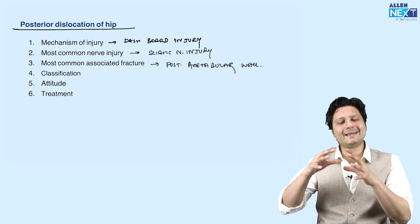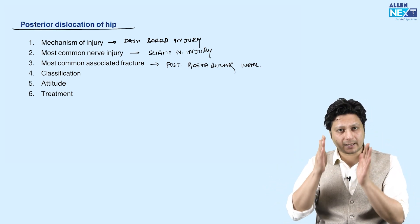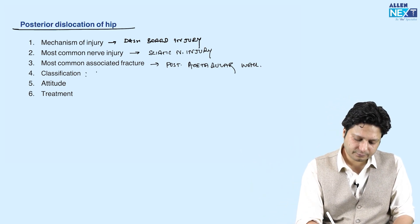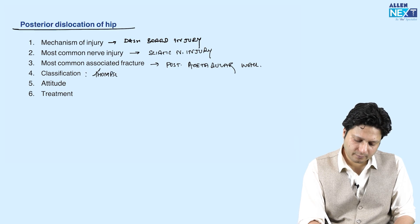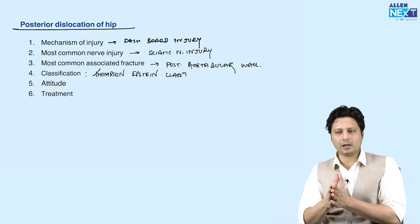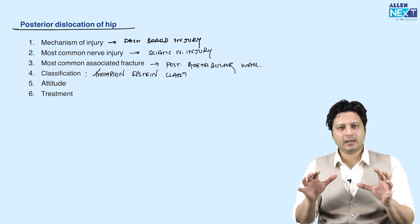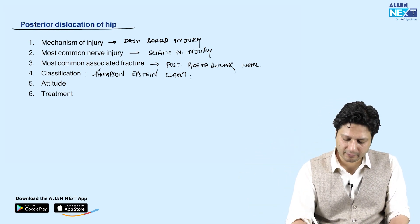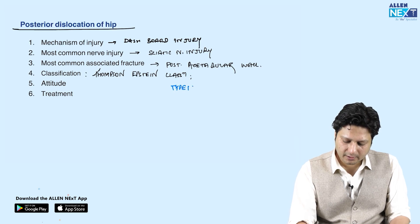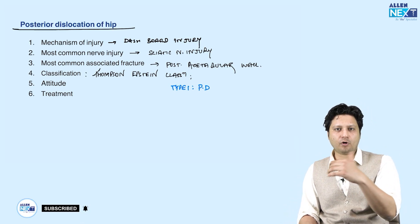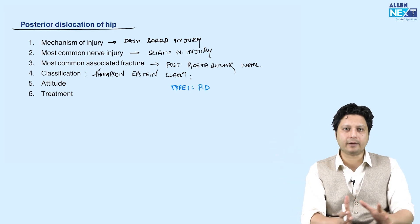Next comes the classification. The Thomson-Epstein classification has categorized posterior dislocation of the hip joint into five different types. Under this classification, the word 'posterior dislocation' remains common across all five types.